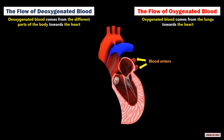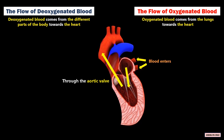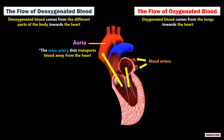The blood moves to the left ventricle through the mitral valve, and to the aorta through the aortic valve. The aorta is the main artery that transports blood away from the heart.